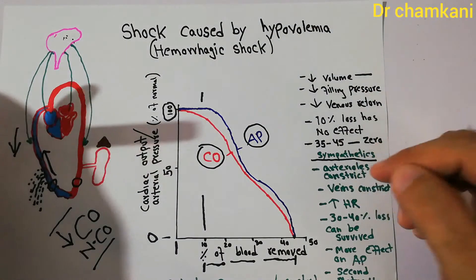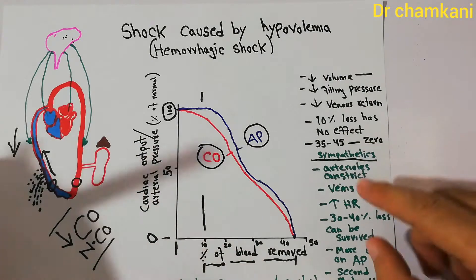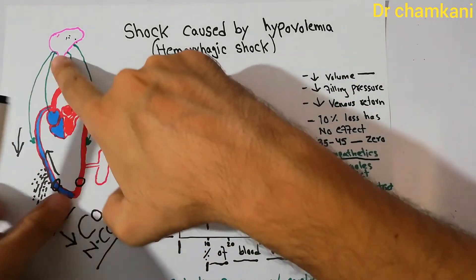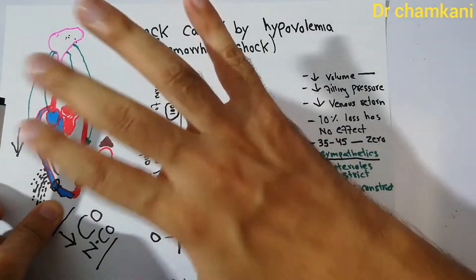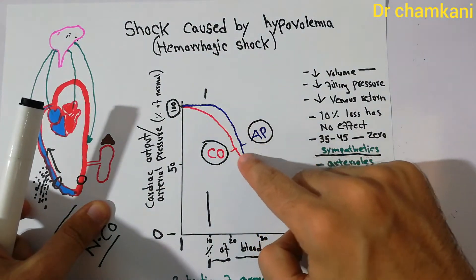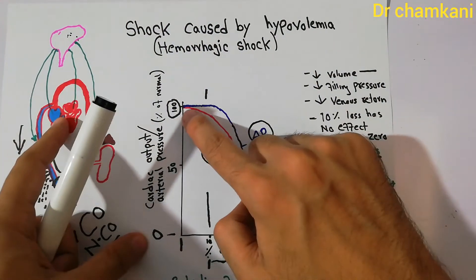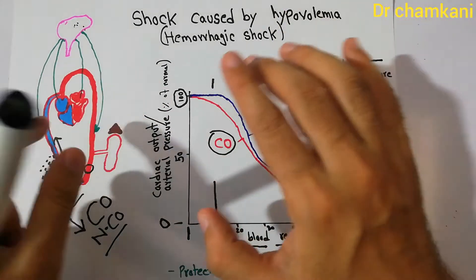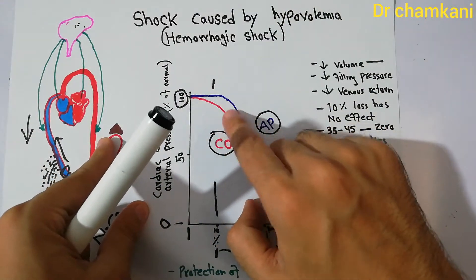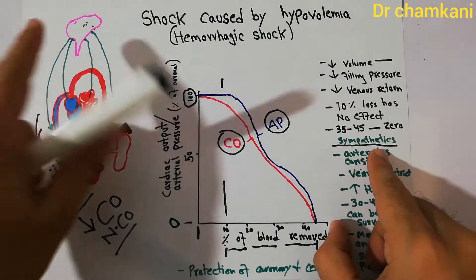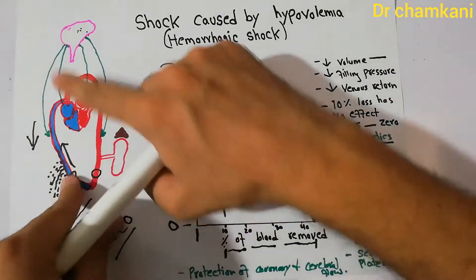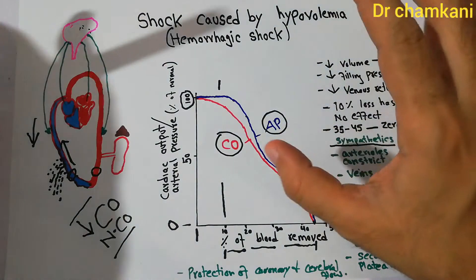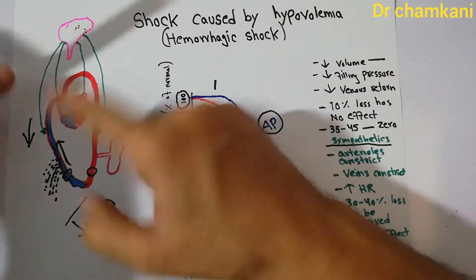As more blood loss occurs, it becomes difficult even for the sympathetic system to maintain arterial pressure and cardiac output, and both start decreasing. Up to some extent, arterial pressure and cardiac output can be maintained through sympathetic activation — which sends signals to the arterioles, the heart, and the veins — but when blood loss becomes very large, these mechanisms begin to fail.